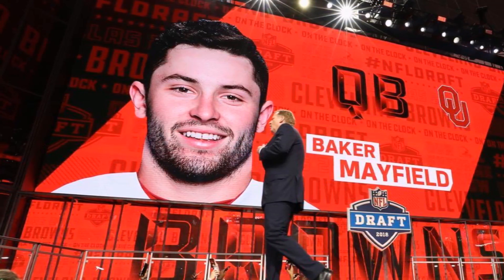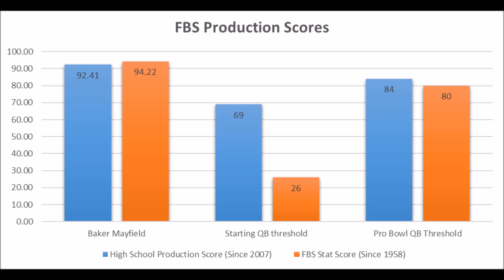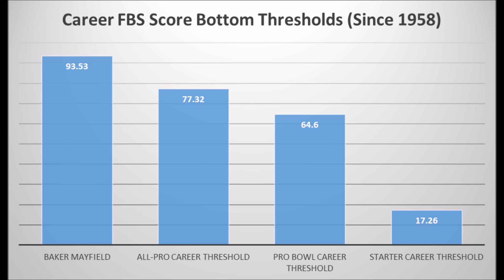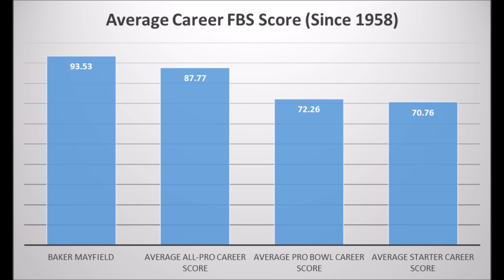Starting with the first pick, we have Baker Mayfield, quarterback out of Oklahoma. Mayfield is by far one of the best testing quarterbacks in this draft class based on data. He had a 92.41 high school production score, a 94.22 FBS production score, and pretty much hits all the Pro Bowl potential marks in terms of both metrics. On top of that, he had a 93.53 career production score, which hits the all-pro threshold, Pro Bowl threshold, and starter threshold.